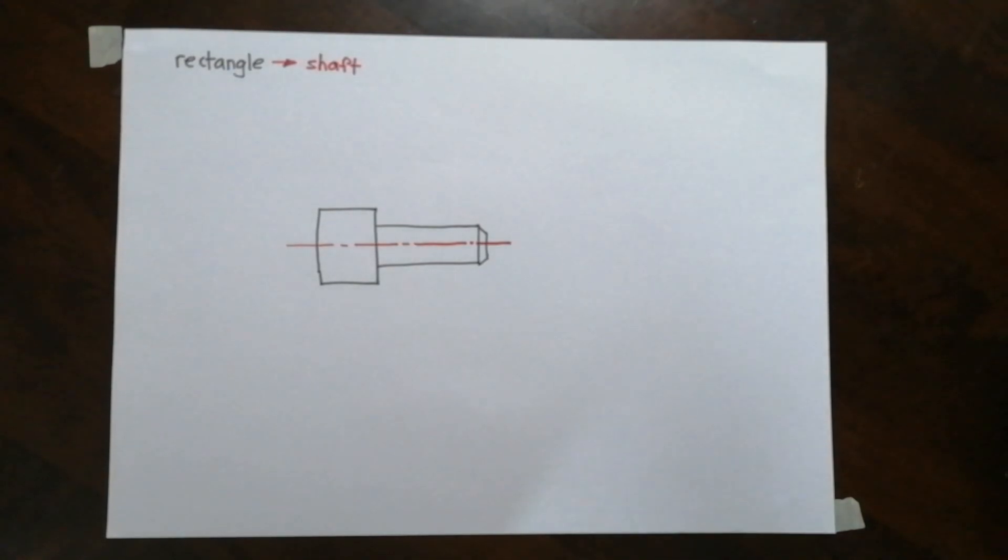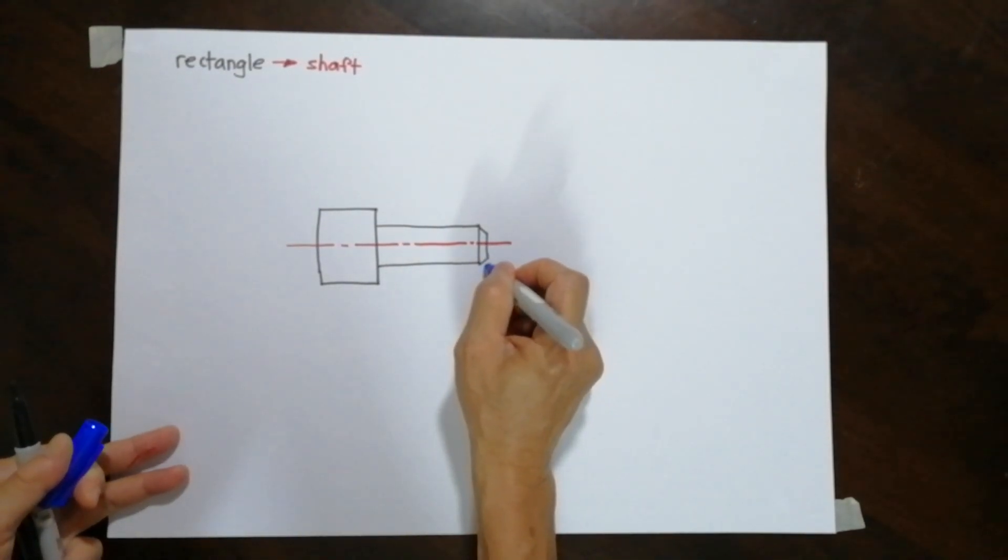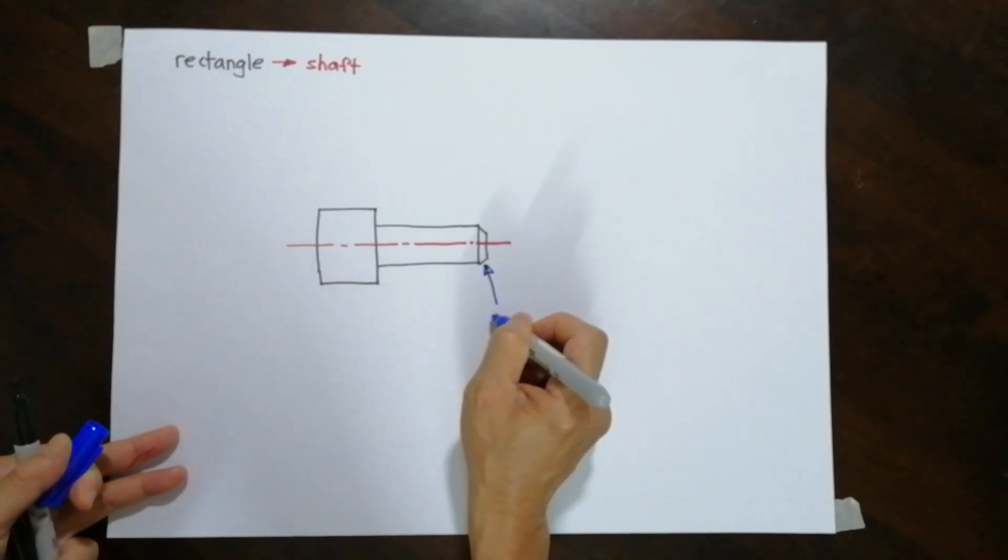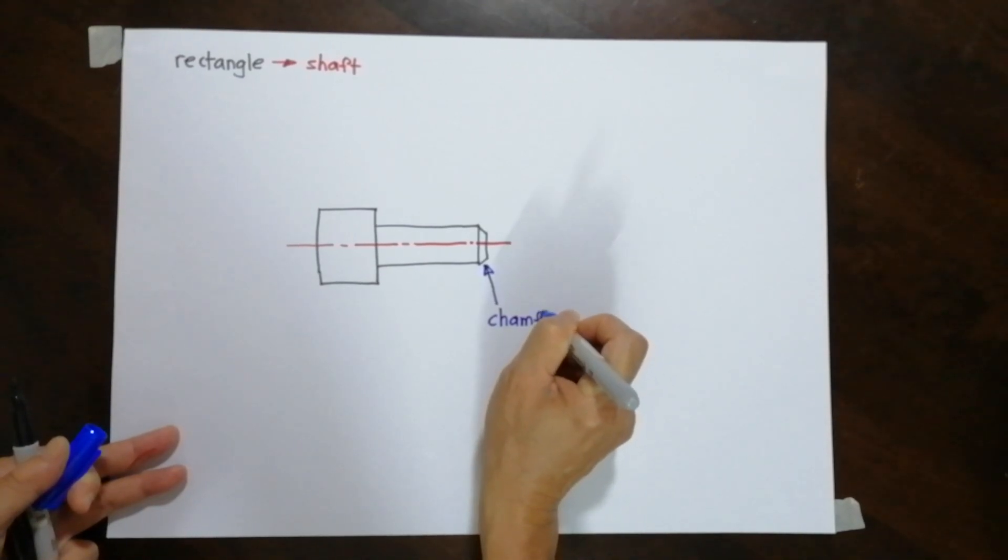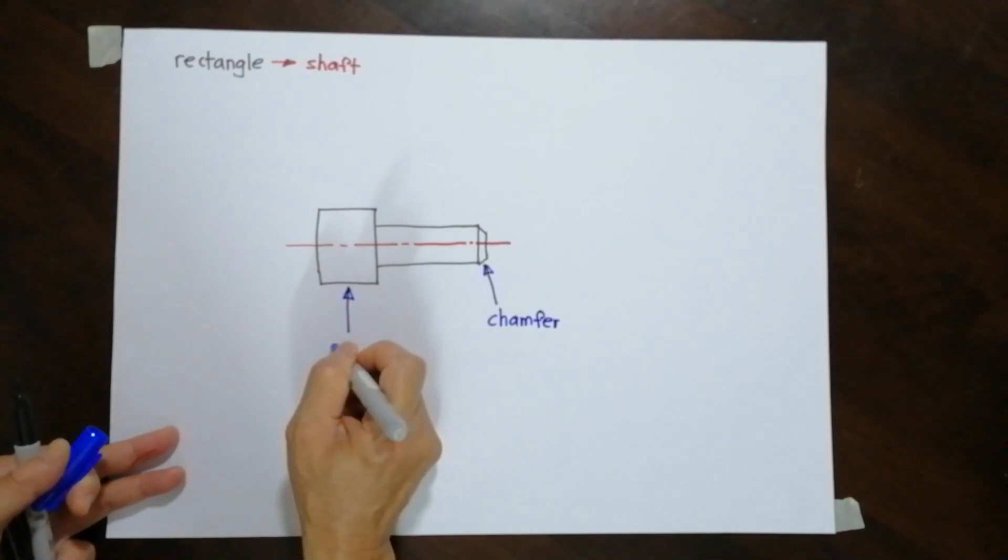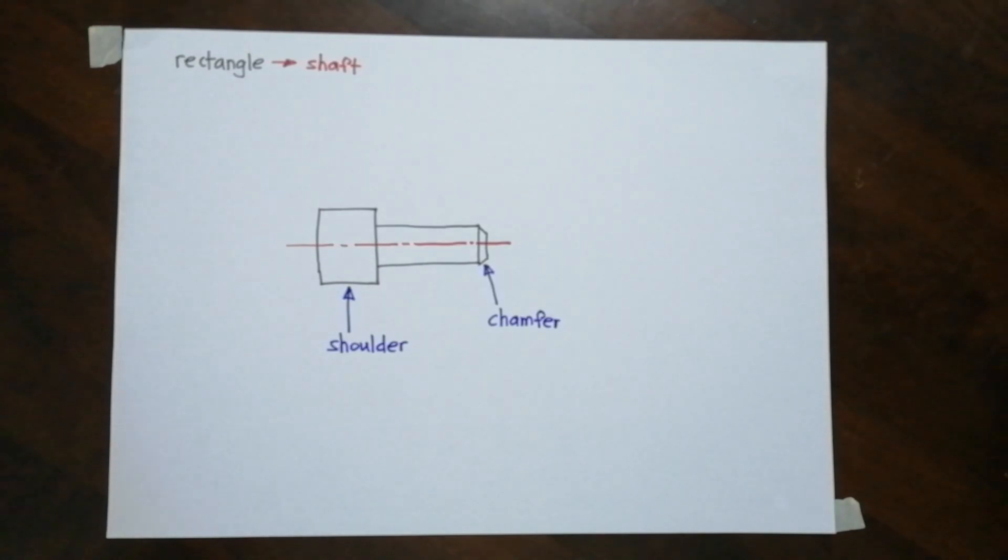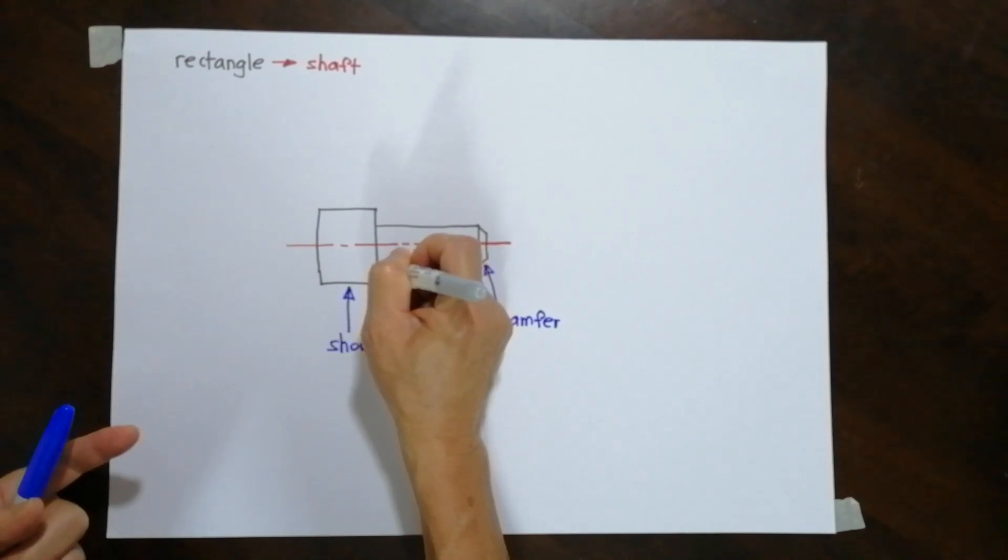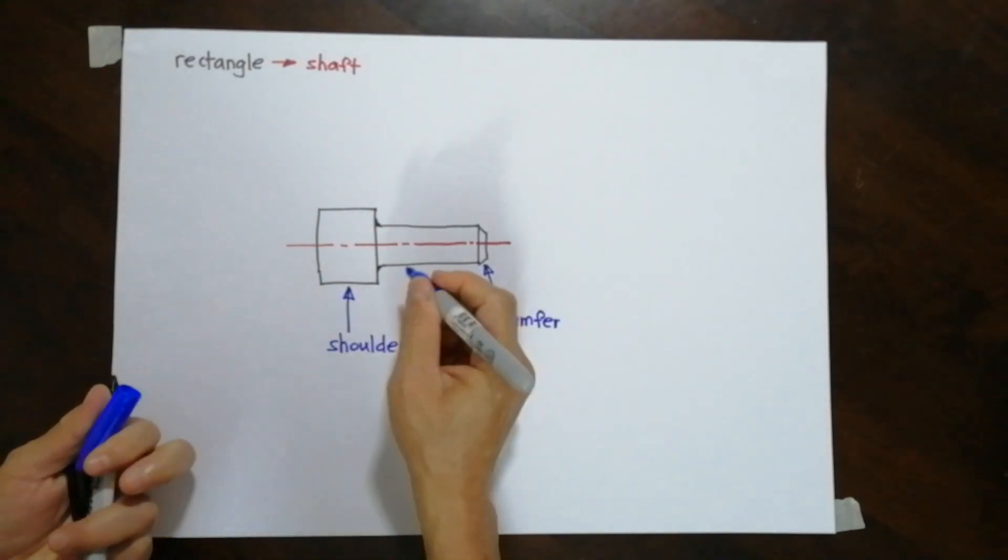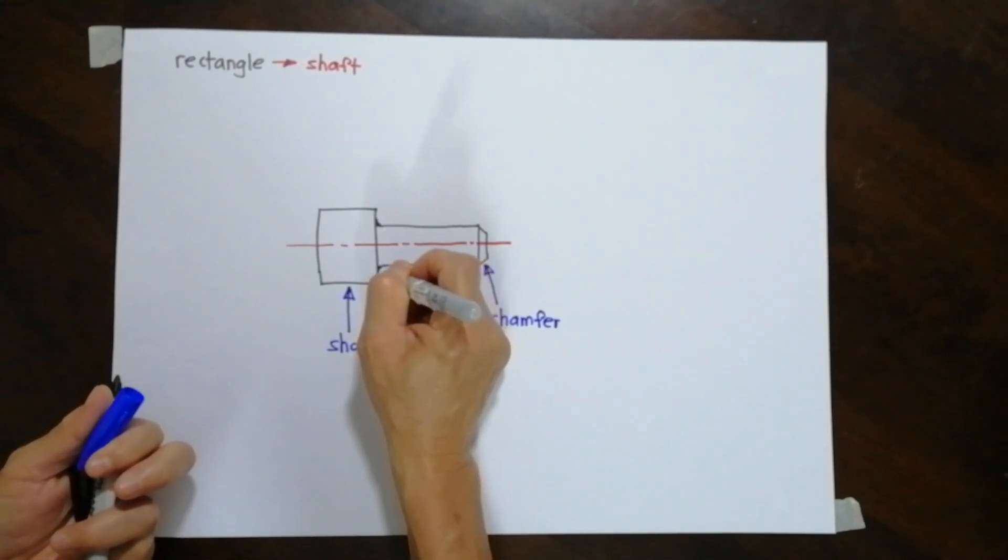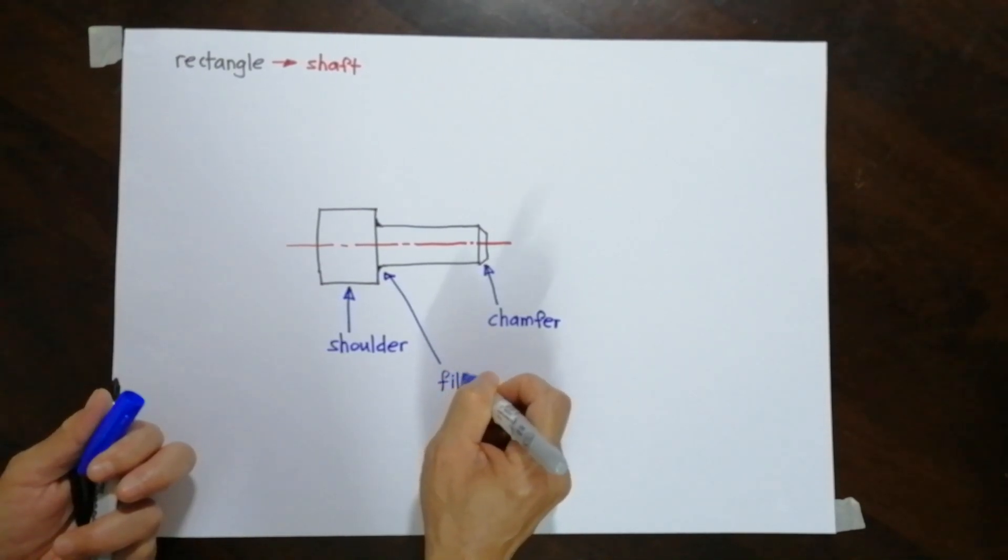This is where I am going to introduce you the features of the shaft. So let me just extend this part of the shaft. At the same time, I need to extend the center line. Now I will introduce you the terms. This is called a chamfer.